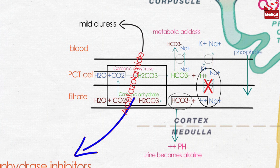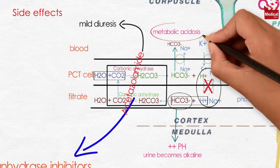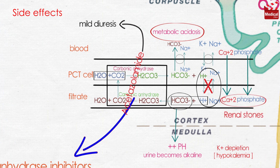Phosphate excretion is increased by an unknown mechanism. The side effects of this drug include mild metabolic acidosis, potassium depletion (hypokalemia), and renal stone formation, as they increase excretion of calcium and phosphate in urine, forming calcium phosphate stones that are insoluble in alkaline urine.